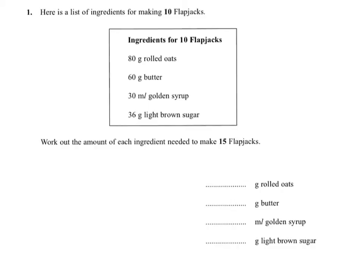I've got to compare 10 with 15. There's a couple of ways you can do this. You can say that 10 times 1.5 comes to 15. So if you're able to, you can multiply each of the ingredients by 1.5.